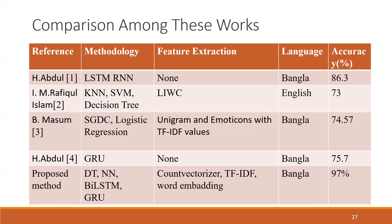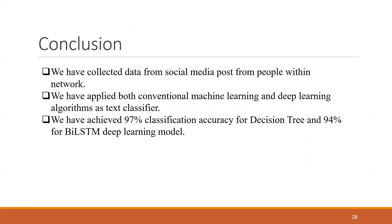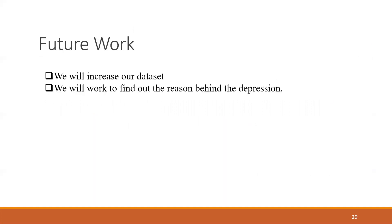We achieved 97% accuracy with Decision Tree. In conclusion, we collected the dataset from social media, applied both traditional machine learning and deep learning techniques, and achieved 97% accuracy with Decision Tree. In the future, we will try to increase the dataset size and try to determine the level of depression.